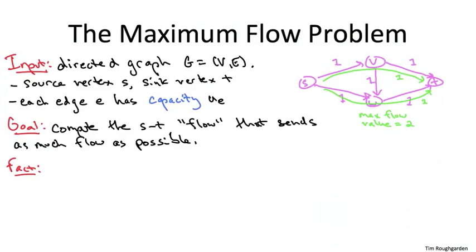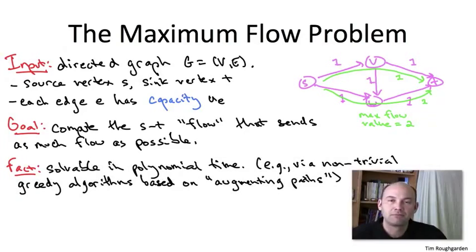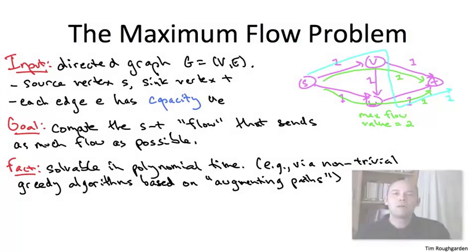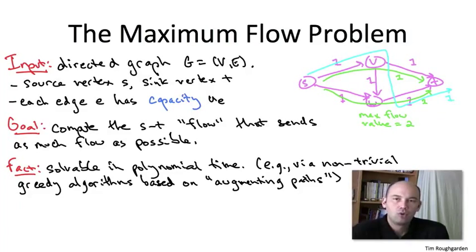One thing worth pointing out is the most obvious greedy approach to the maximum flow problem doesn't work. The most obvious thing to do is to just find a path where there's residual capacity along every edge, send flow along that path, and repeat. So the suboptimality of the naive greedy algorithm is already evident in the four vertex network that I've shown you on this slide. Suppose in the first iteration, to find your first path to push flow along, you wind up choosing the path that goes from S to V to W to T. So that has three edges on it. All of those edges have capacity one, so you're free to push one unit of flow along this zigzag path.